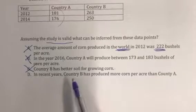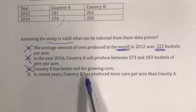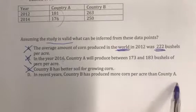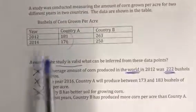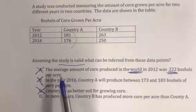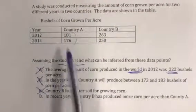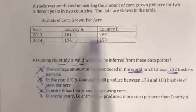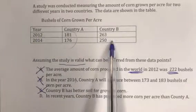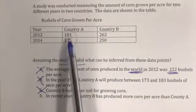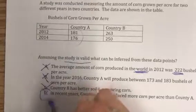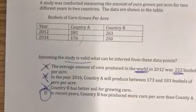Option D says in recent years Country B has produced more corn per acre than Country A. That is the only thing we can take from this data. We know from the data given that in past years Country B has produced more per acre than Country A. So our correct answer is D.